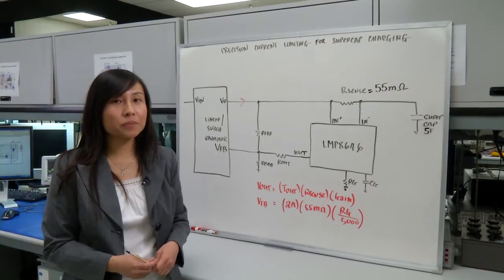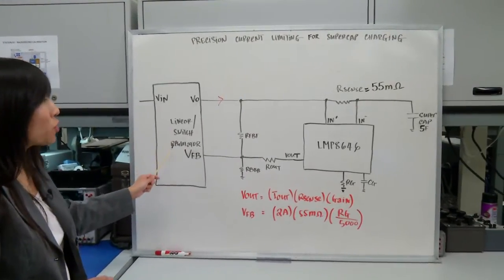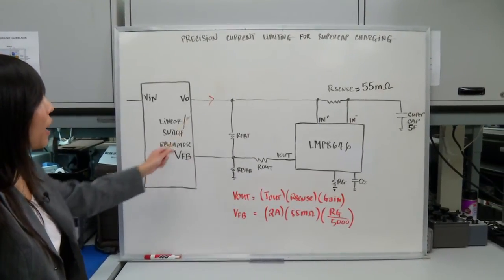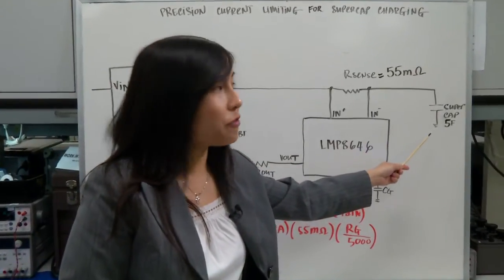So let's see how that works. On the left hand side of the board we have a linear or switch regulator and it will have some sort of output current in order to charge this supercapacitor of 5 farads.